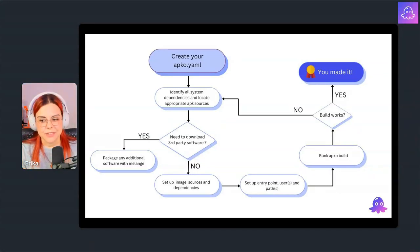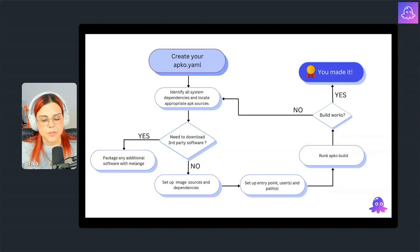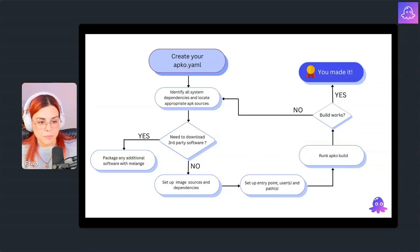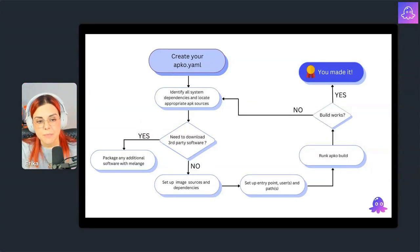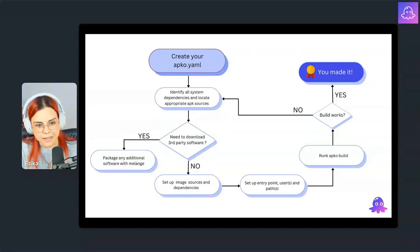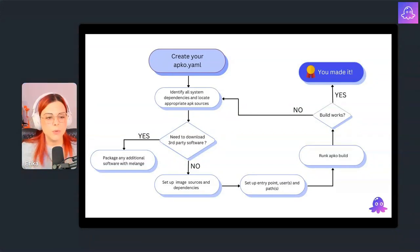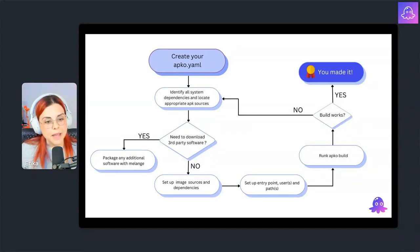The next question is: do you need to download third-party software? I mean user-land dependencies — like Composer dependencies in PHP, NPM dependencies — anything that is not already available as an APK. Then you're going to need to create a package with Melange. If you want the final result to be a distroless image with that software in it, then you have to package it by creating a Melange package.